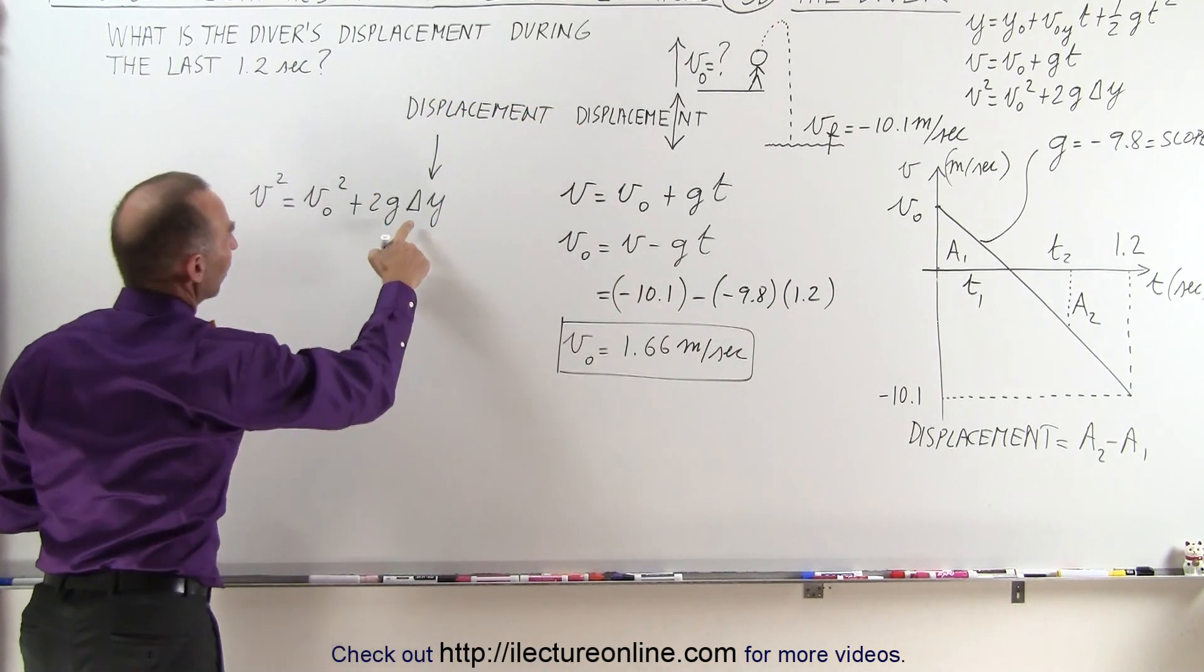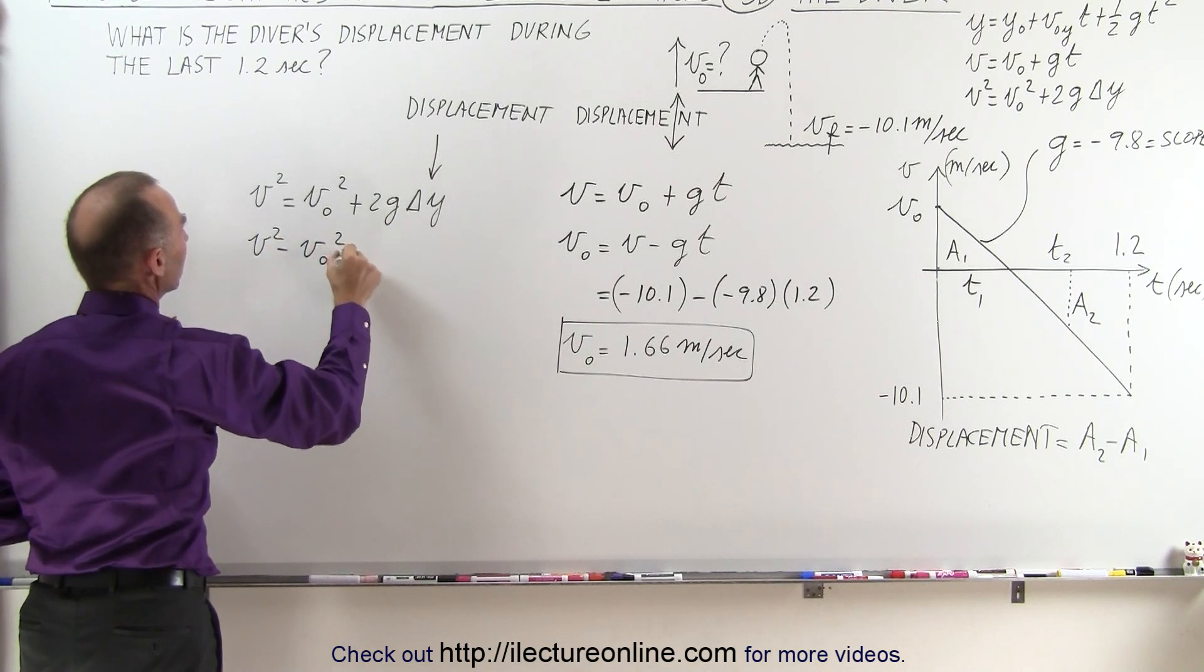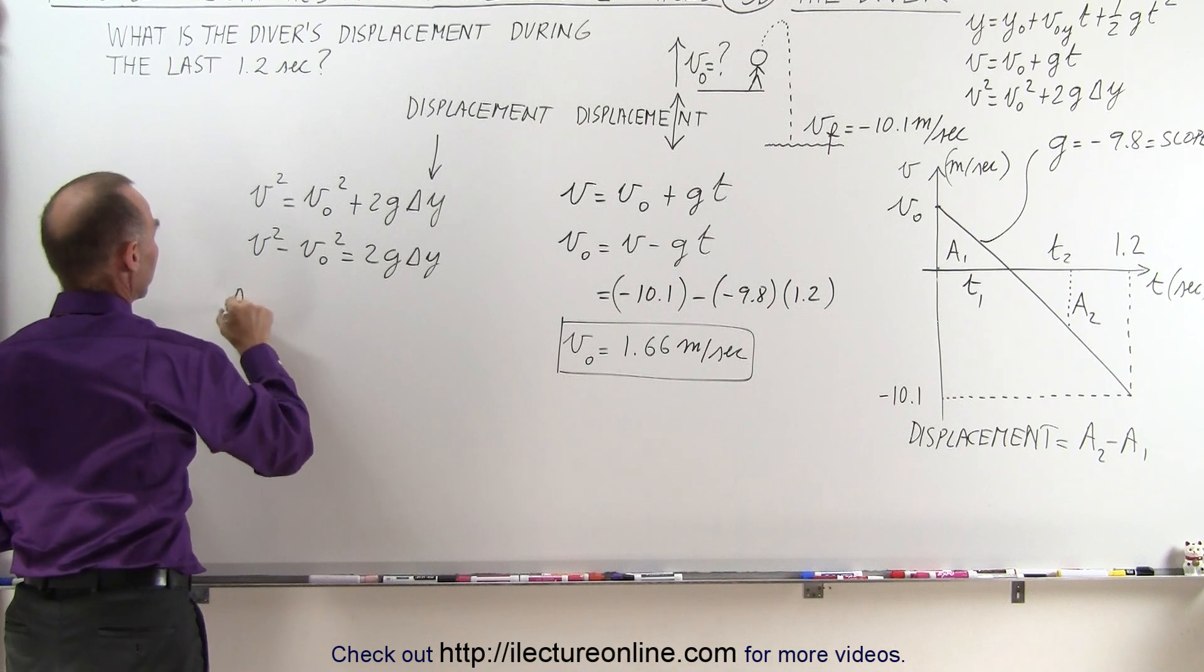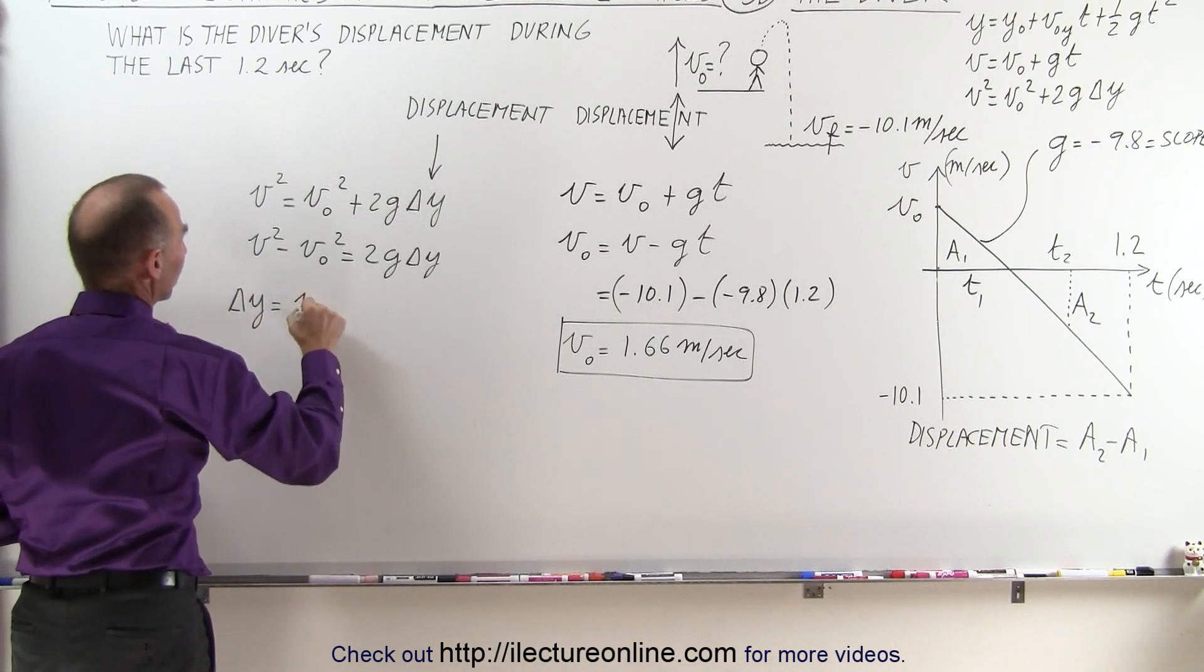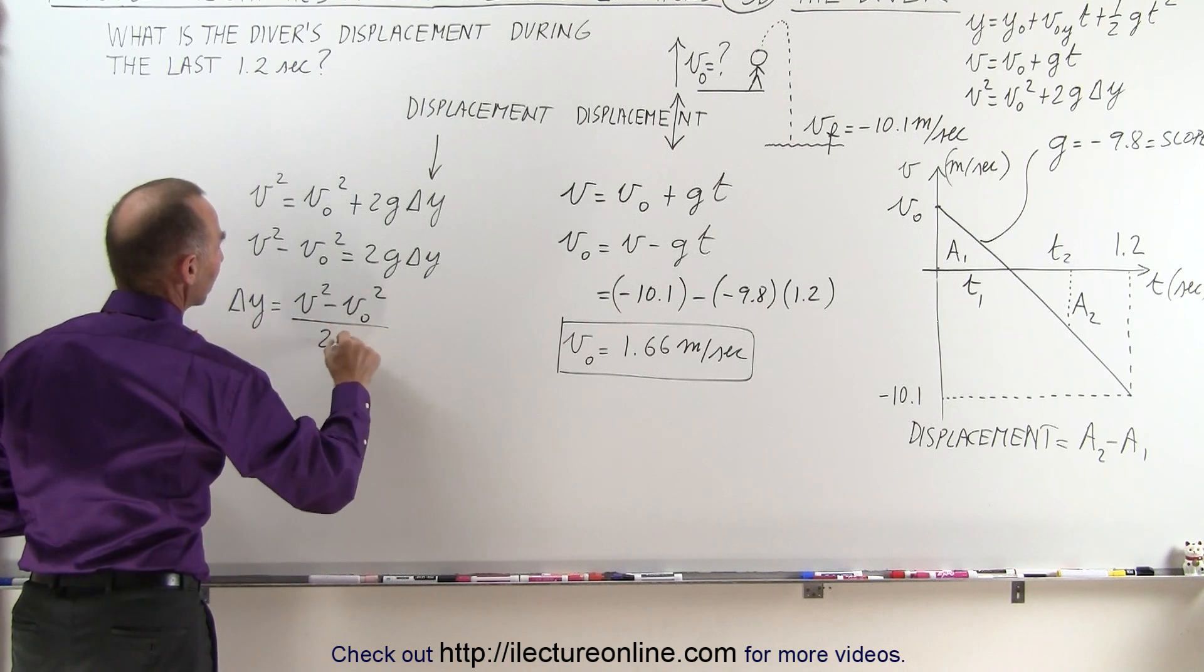Okay, so we're going to solve this for delta y. We have v squared minus v initial squared equals 2g delta y, or delta y is going to be equal to the final velocity squared minus initial velocity squared divided by 2 times g.